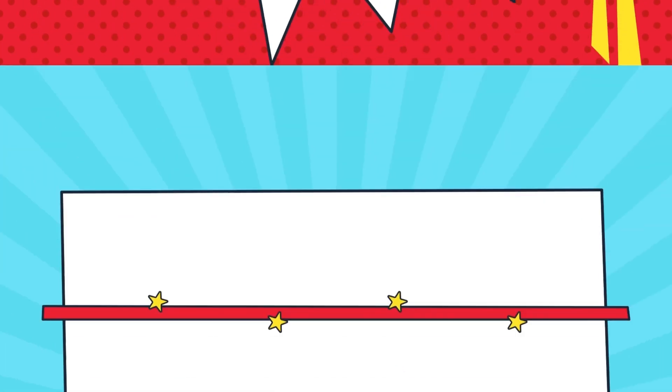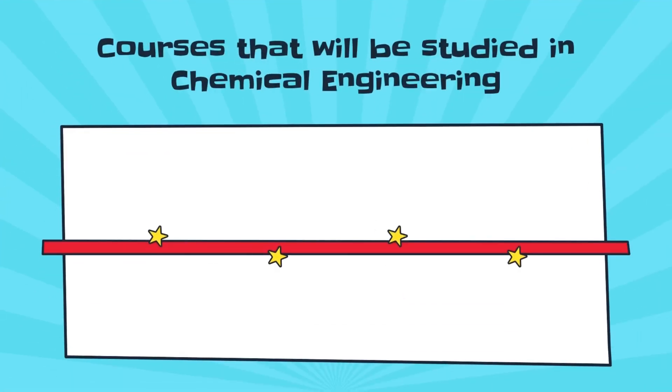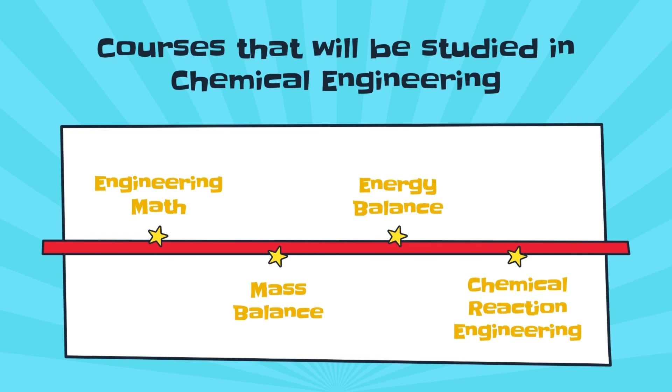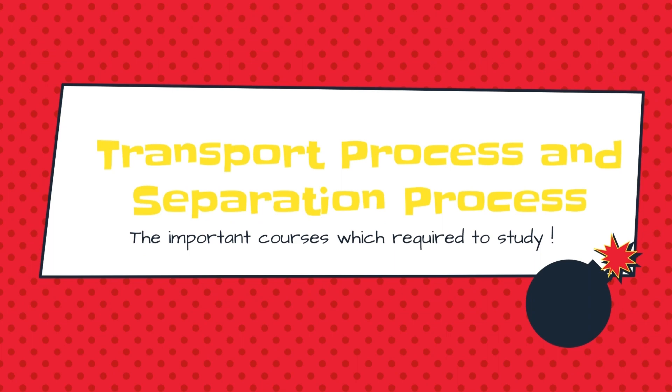Next, I will share some information about the courses that will be studied in chemical engineering. For example, we will take engineering math, mass balance, energy balance, chemical reaction engineering, and so on. Moreover, transport process and separation process are also the important courses which are required to study.